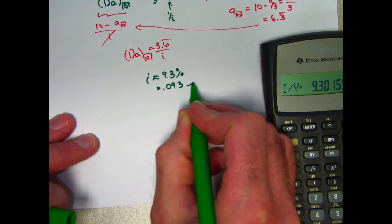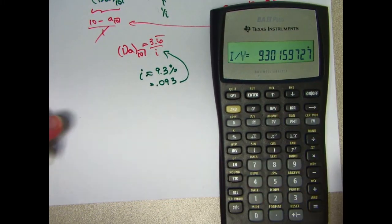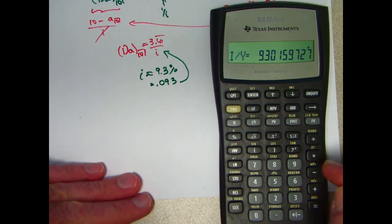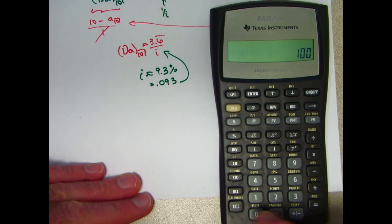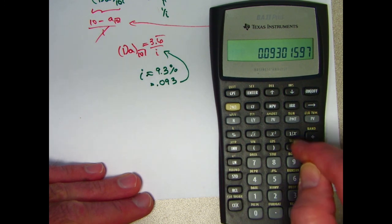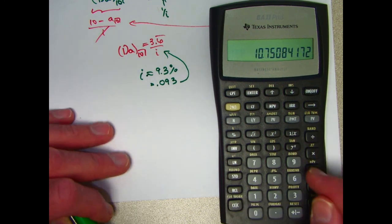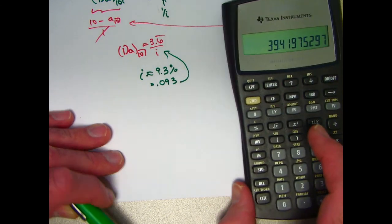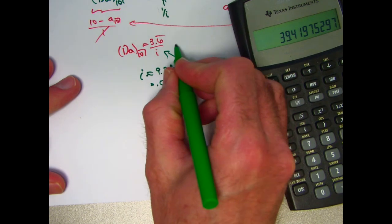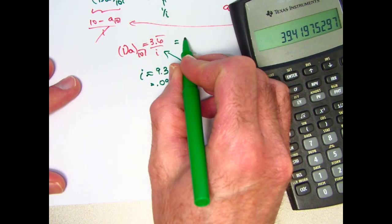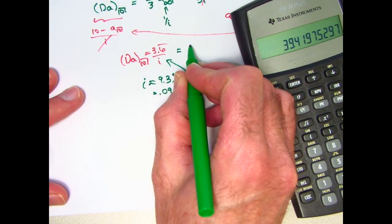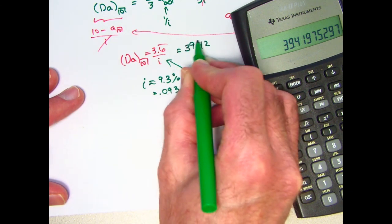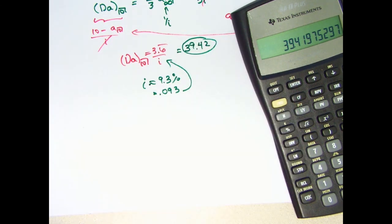I'll go ahead and take its reciprocal here. Of course, I need to divide it by 100 first. Now take its reciprocal and multiply by 3.6 repeating. There we go. The answer for the present value of the decreasing annuity, which is the present value of annuity 1, is about 39.42. And that is correct.